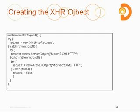Inside of it we have three different requests, but you'll actually only make one — this is checking for different browsers. The first one, new XMLHttpRequest, is going to cover a wide range of browsers like Firefox and Mozilla — that's going to catch most browsers.